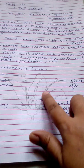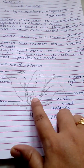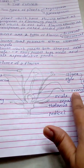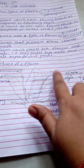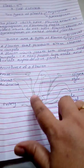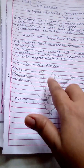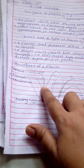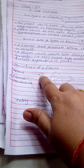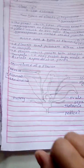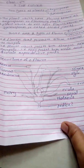The gynoecium consists of three parts: ovary, style, and stigma. The androecium consists of two parts: anther and filament. The anther and filament are joined together with a connective. This is all about the structure of the flower.